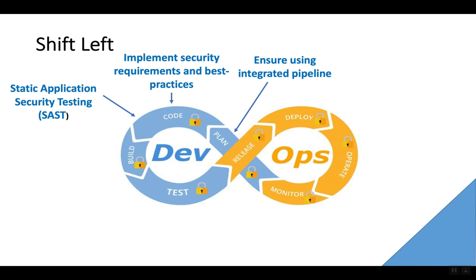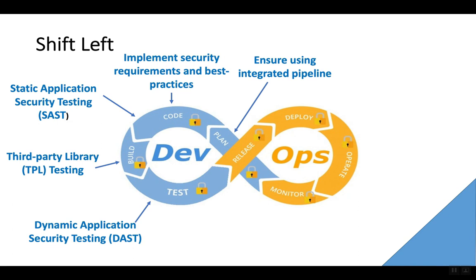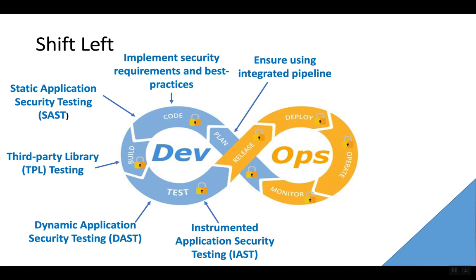For those issues that do make it into the development, we start with static application security testing very early by having those testing engines inspect the code as it's being written. We can also bring in the third-party library testing at least as soon as we start integrating the third-party libraries — certainly by the time we get to the build or integration steps. Finally, we can do dynamic application security testing once the application has made it far enough along to interact with, and that can be partnered with instrumented application security testing in order to get a look at the application from both the client-side and server-side simultaneously.